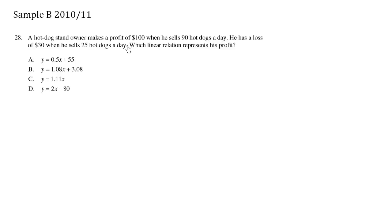A hot dog stand owner makes a profit of a hundred dollars when he sells 90 hot dogs per day. He has a loss of thirty dollars when he sells 25 hot dogs per day. Which linear relation represents his profit?